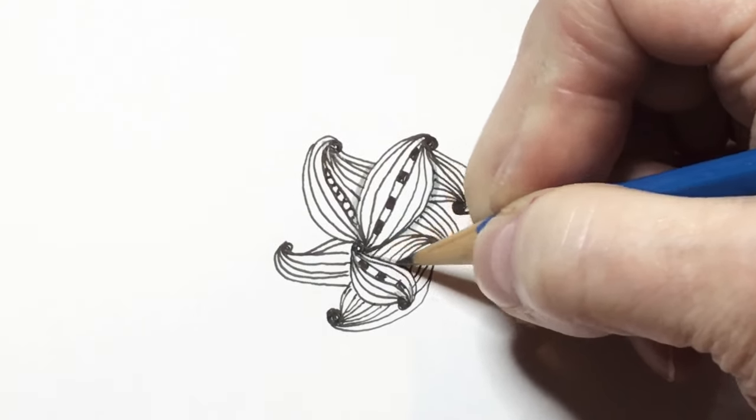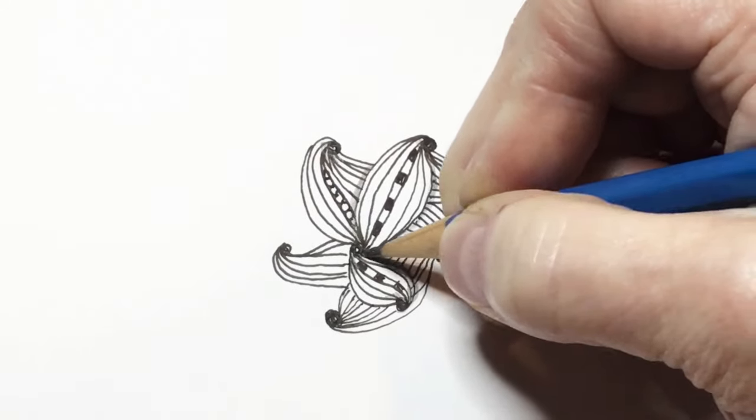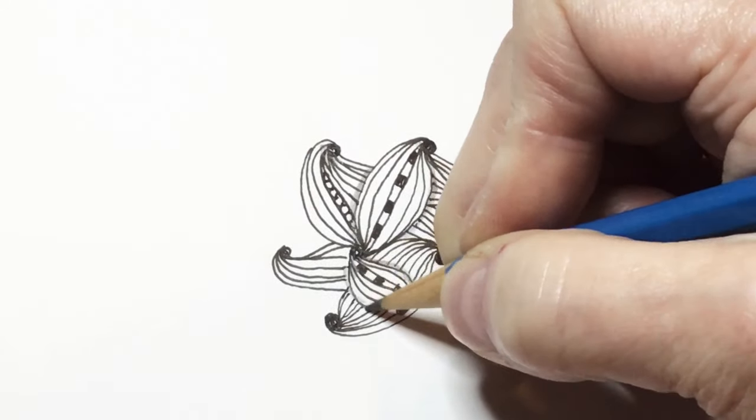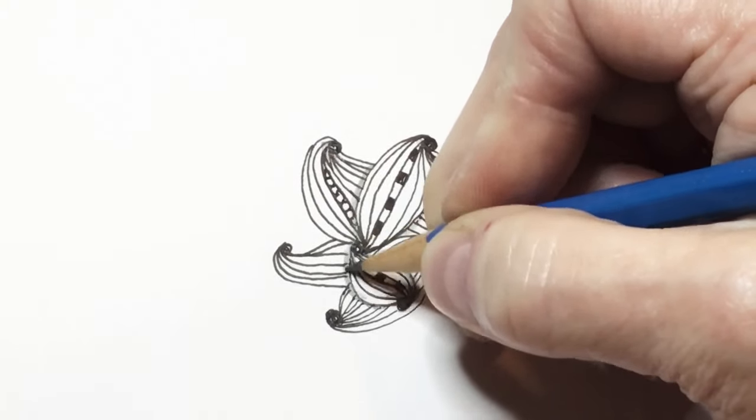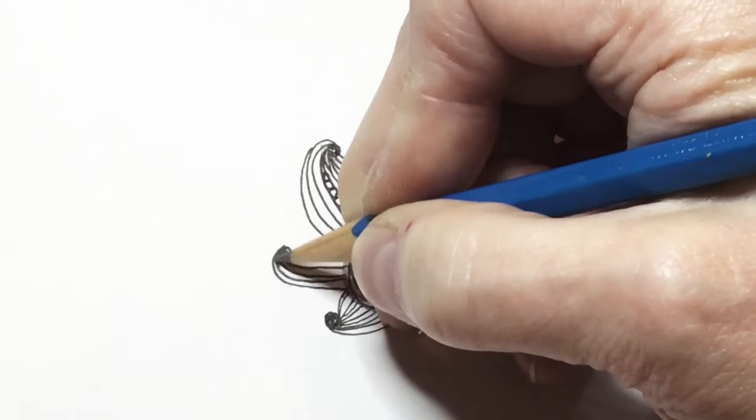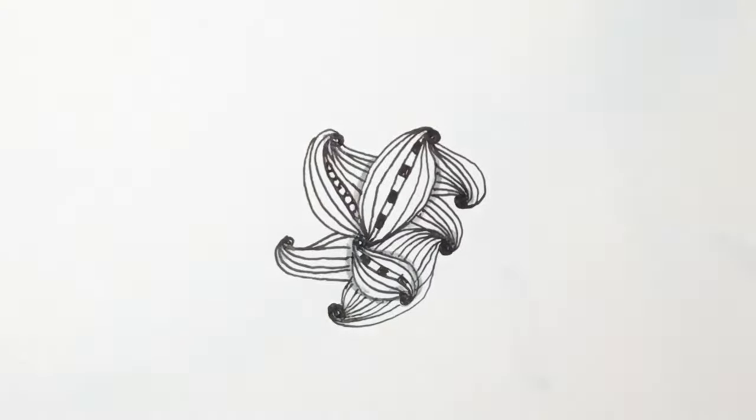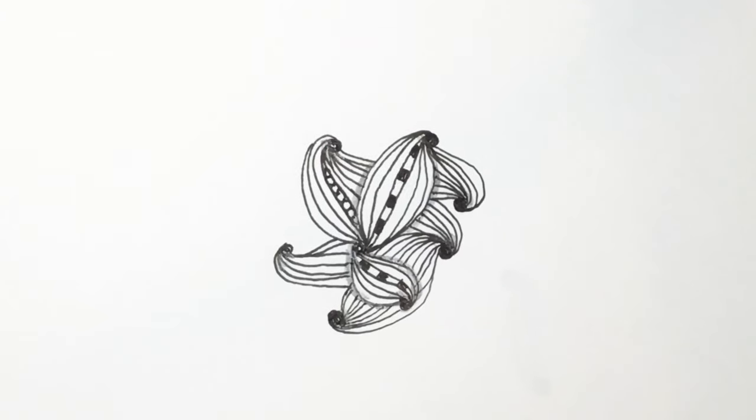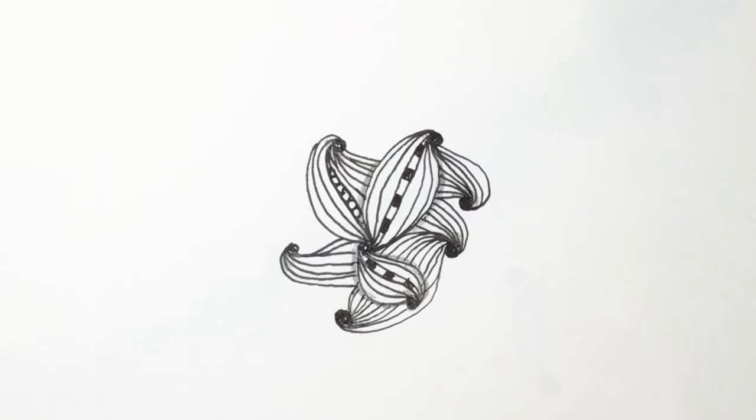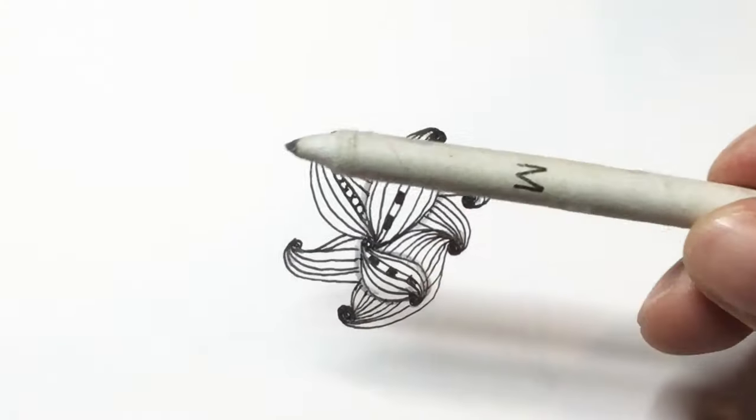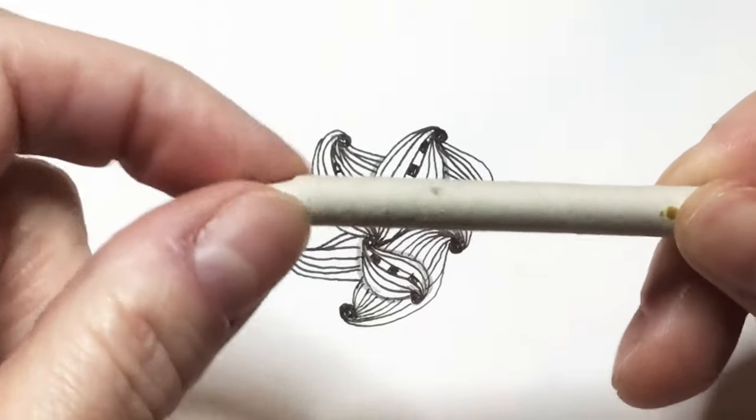And then since this one is sitting on top, I'm going to take my graphite around this area, and just really where they overlap and the ends, that's going to be your most important part for shading.